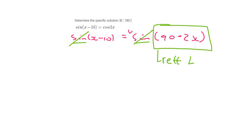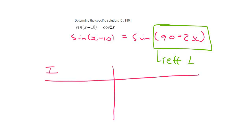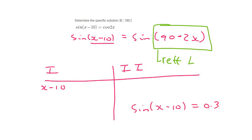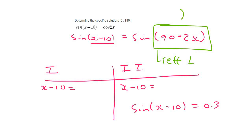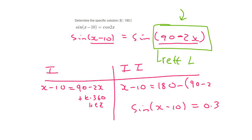There were no negatives in front, so we work in the quadrants where sin is positive — quadrants one and two. In quadrant one, we set x − 10 equal to the reference angle: 90 − 2x + k·360, where k is an integer. In quadrant two, we say 180 minus the reference angle, so: 180 − (90 − 2x) + k·360, where k is an integer.